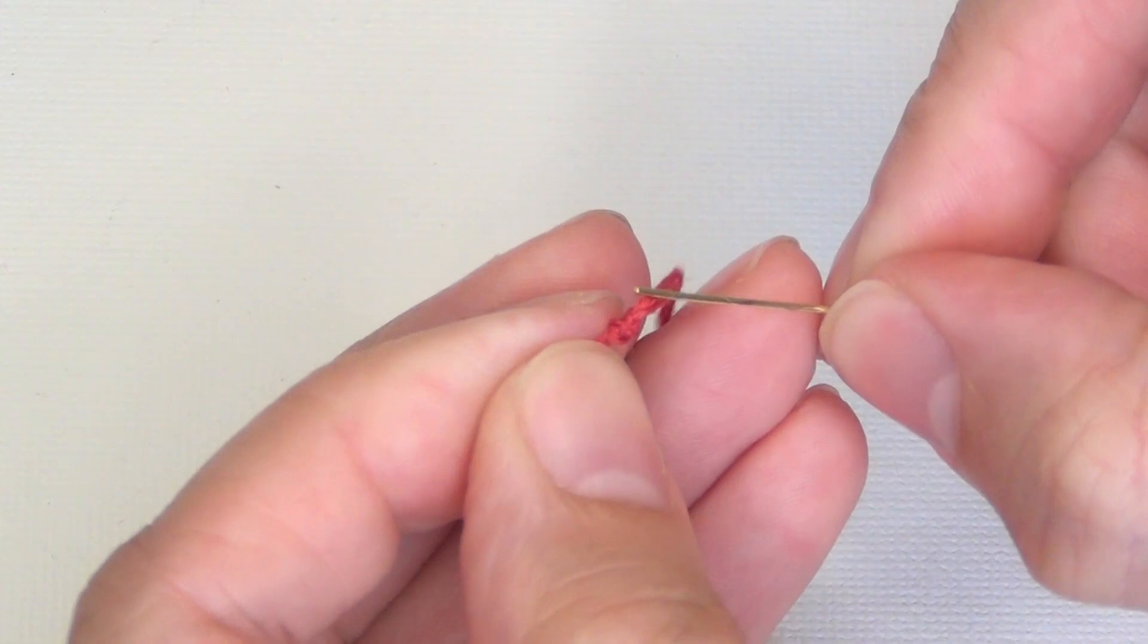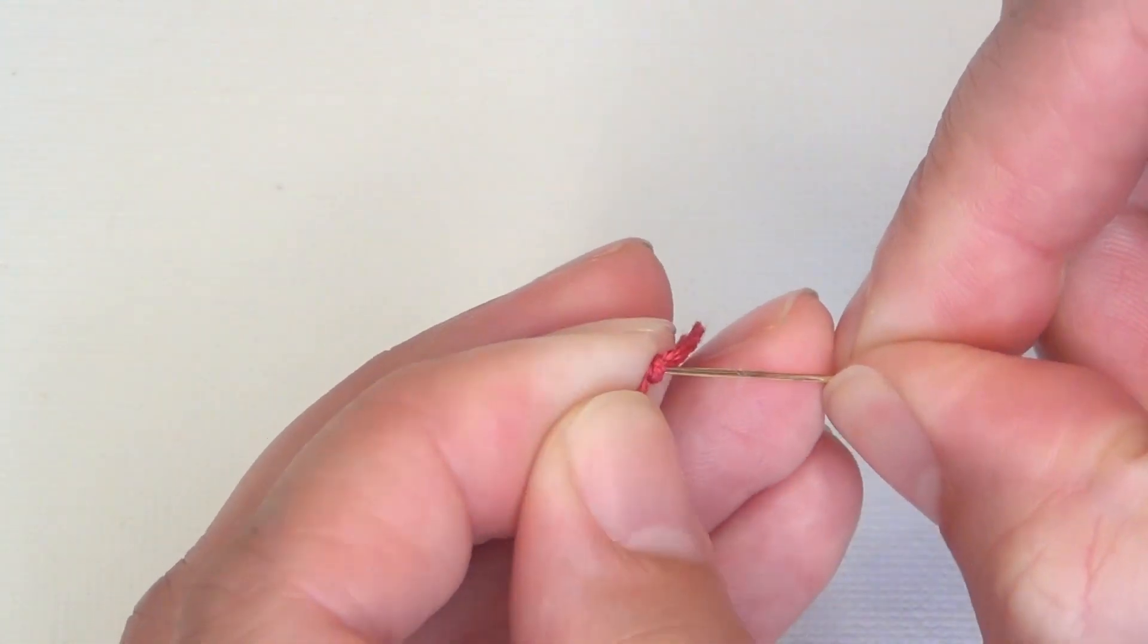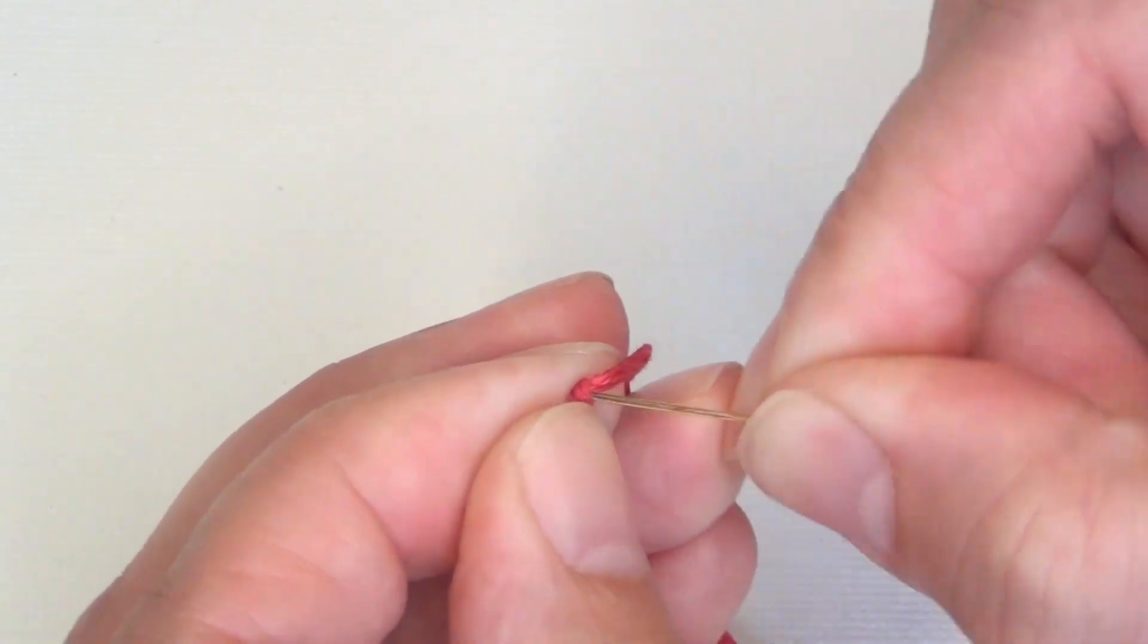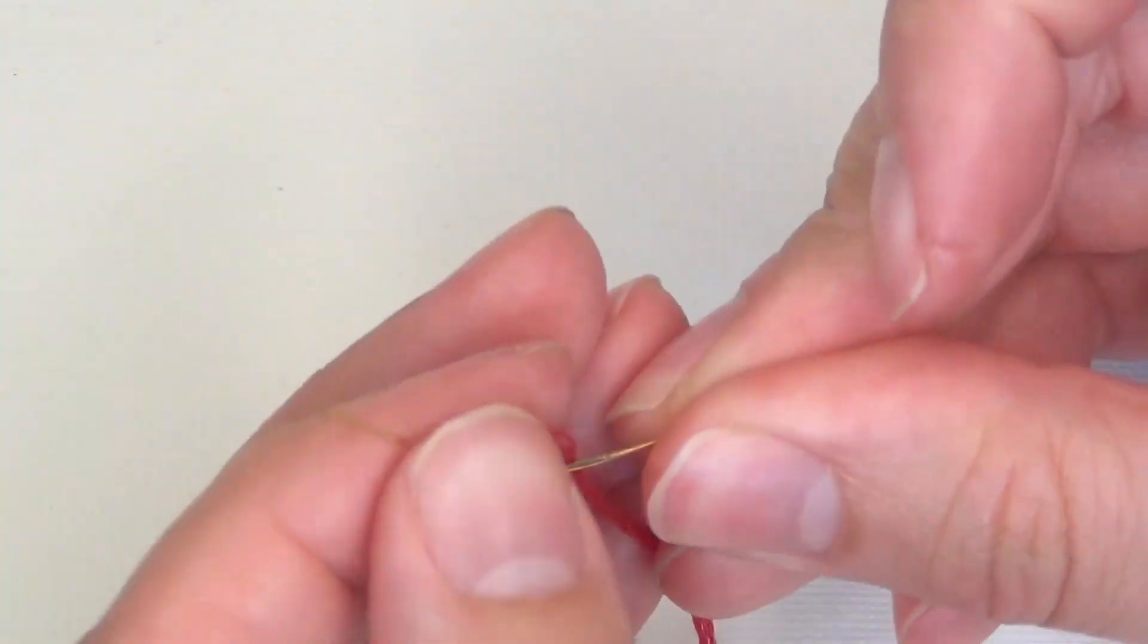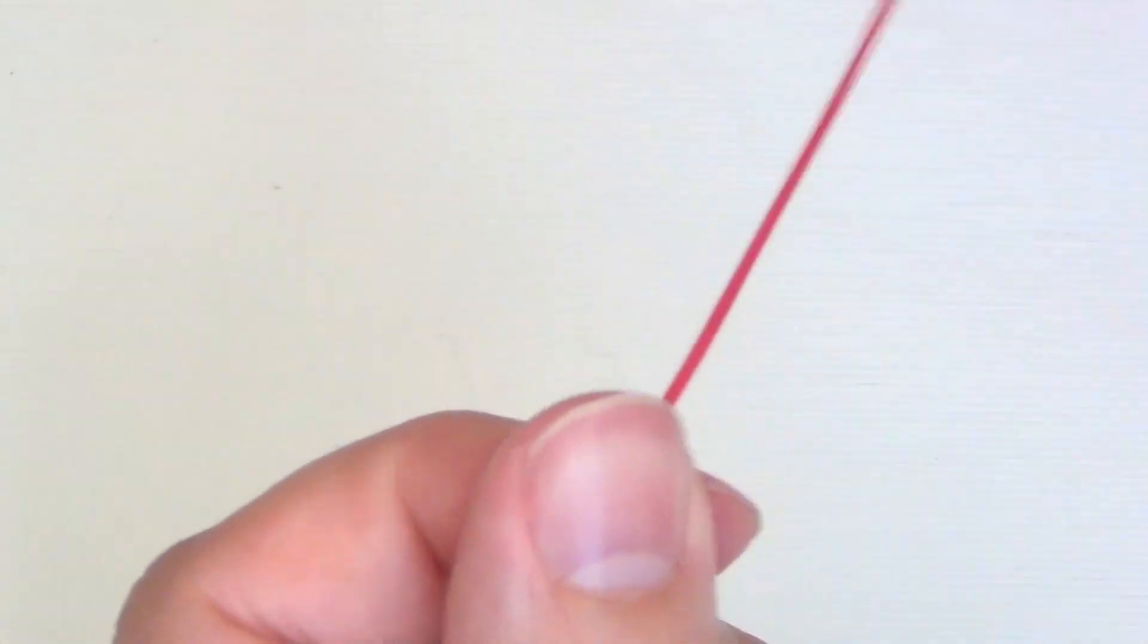This step is optional but I find it's helpful to put a knot in one end of the embroidery thread and then slip something like a head pin or an eye pin through it. This just gives you an easier end to work with because it's sort of on a needle and it makes it easier to stitch through the chain links.